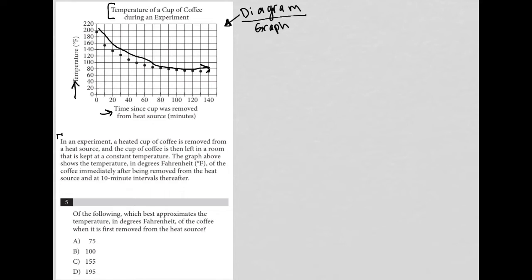So we have in the information provided up here: in an experiment, a heated cup of coffee is removed from a heat source, and the cup of coffee is then left in a room that is kept at a constant temperature. The graph above shows the temperature in degrees Fahrenheit of the coffee immediately after being removed from the heat source and at 10-minute intervals thereafter. So again, we see that from the graph.